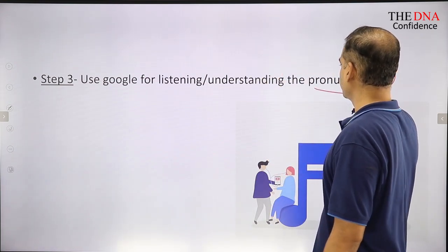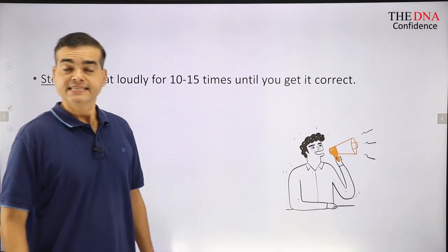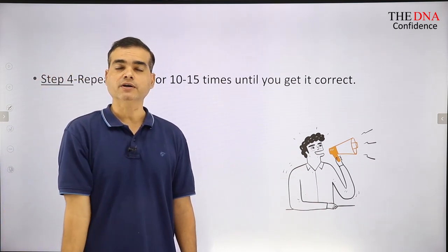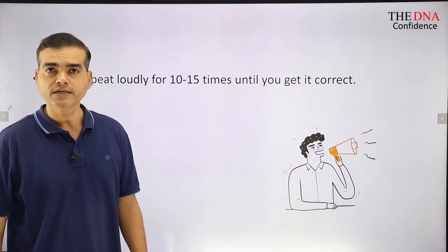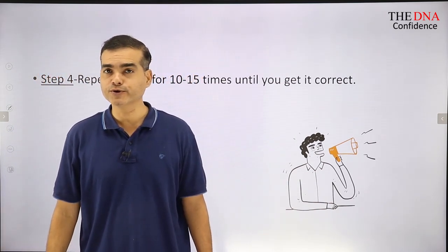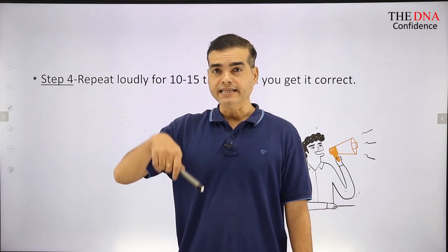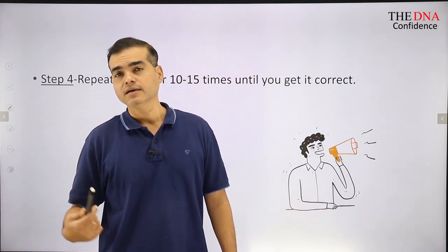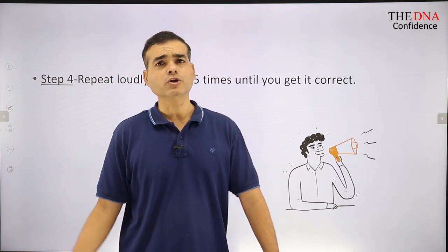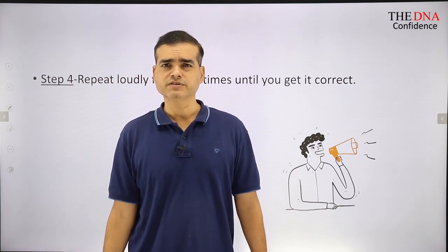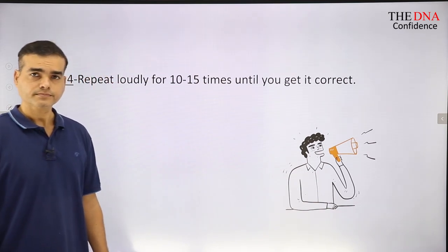Once you understand the pronunciation — like 'jurisdiction' — the next step is very crucial: say it out loud. Say that word loudly. Say it with me: jurisdiction. Say it five to ten times out loud. It's like going back to school — kids say poems, rhymes, and multiplication tables loudly. Why? Because they are getting their pronunciation better and their vocal cords in shape. You have to read it loudly. Remember, only about 5% of words need this treatment.